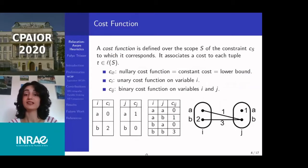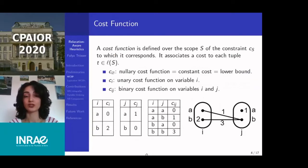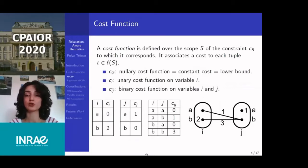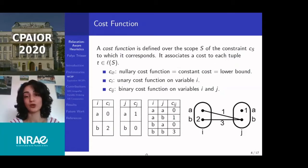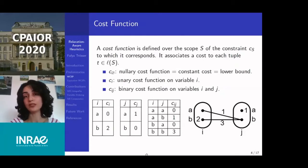We mainly work with the weighted CSP framework, which is more flexible than classical CSPs. We define cost functions to replace hard constraints: instead of allowing or forbidding tuples, a cost function associates a cost to them. The nullary cost function is defined over the empty set and corresponds to the cost paid regardless of the solution. Unary and binary cost functions are defined over one and two variables respectively. They can be represented by cost function networks — for example, with two variables i and j with two values a and b. If I assign both variables to b, I pay a total cost of 2 plus 0 plus 3, which is 5.